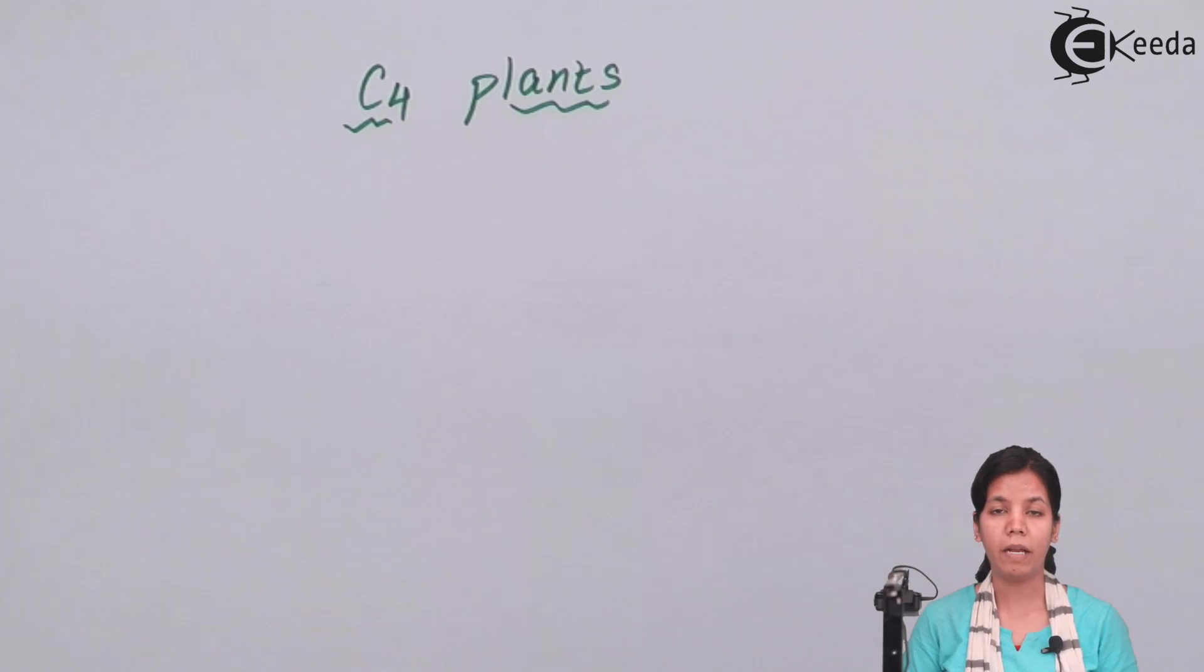C4 plants are temperature tolerant, that is them. Second, they lack photorespiration. Thirdly, they lack an enzyme which is RUBP Rubisco.